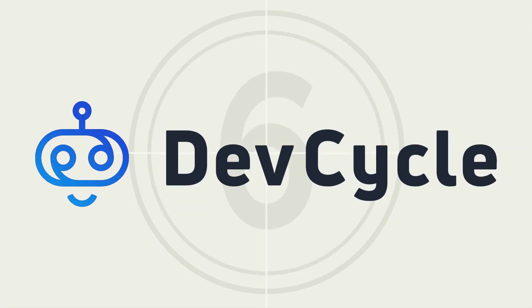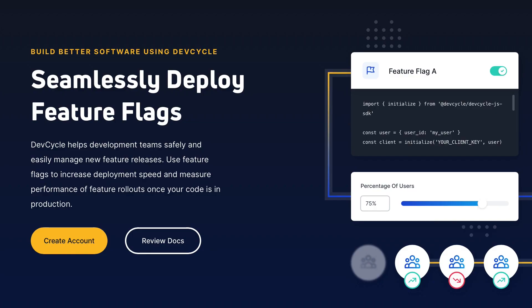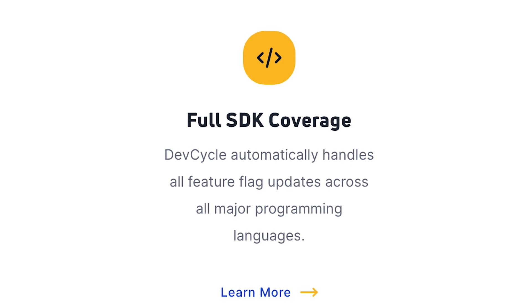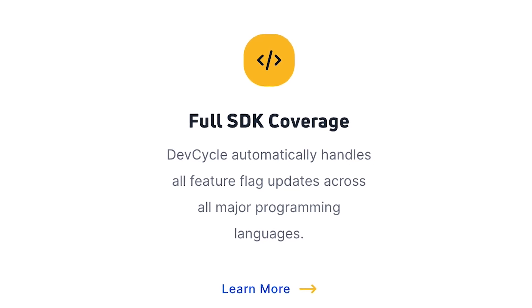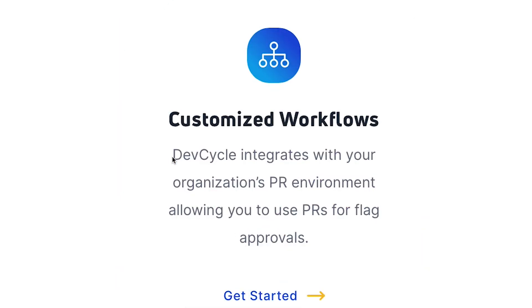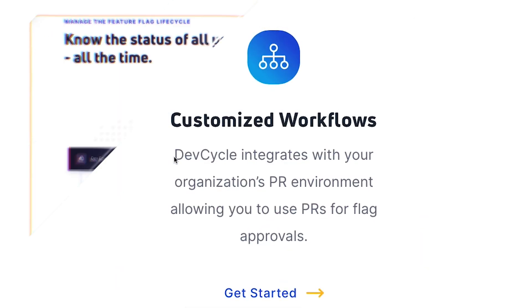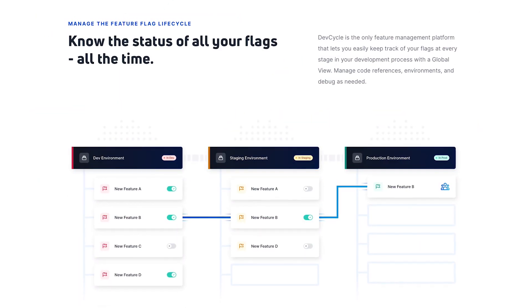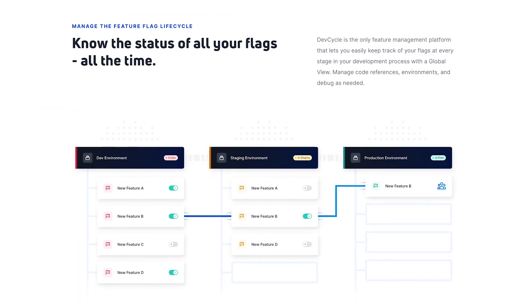Last is DevCycle. DevCycle is a feature management solution focused on improving development workflows and reporting. Its feature flag platform comes with full SDK coverage for all major languages, customized workflows, and status reports, aiding transparency.